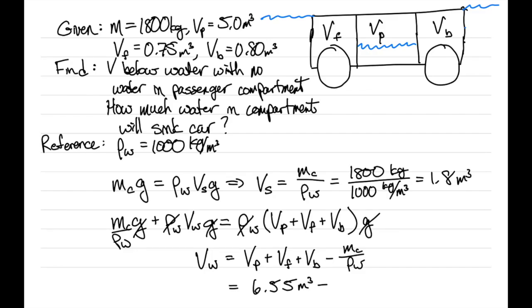So that's minus 1.8 cubic meters, and we have 4.75 cubic meters of water in the passenger compartment so that it's very close to being full.